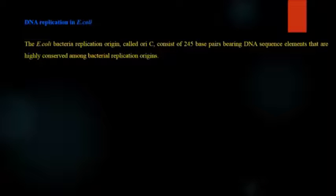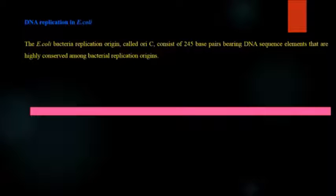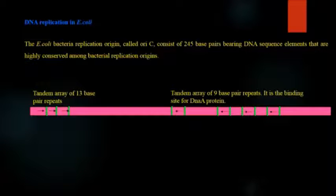In E. coli, the bacterial replication origin has 245 base pairs bearing DNA sequence elements that are highly conserved among bacterial replication origins. It has 13 base pair tandem repeats plus 9 base pair repeats and it is the binding site for the DNA A protein.